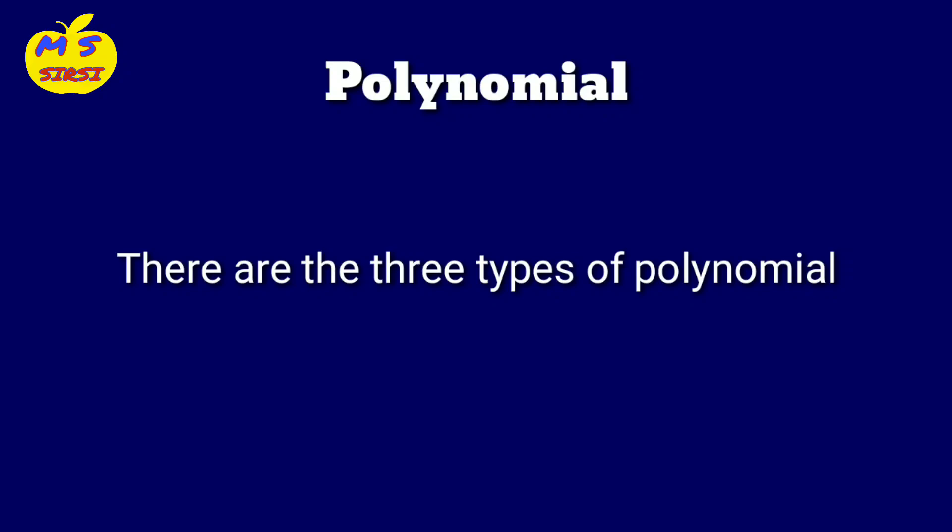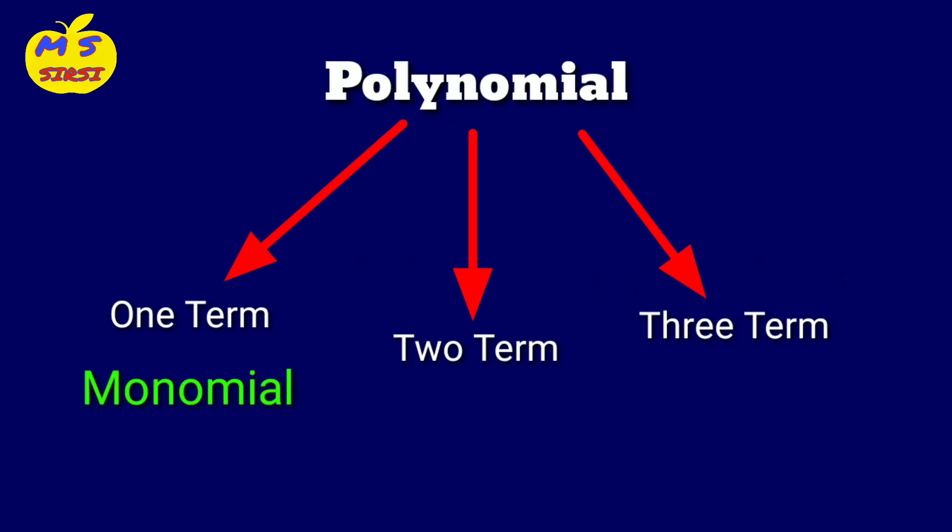Now we come to types of polynomial. There are three types of polynomial: one term is monomial, two term is binomial, three term is trinomial.